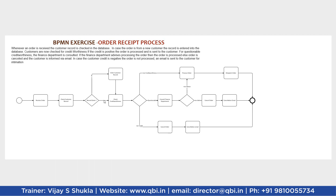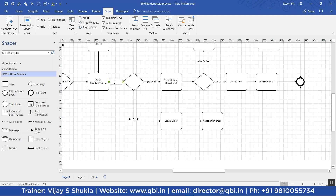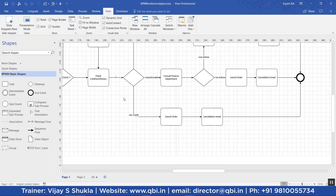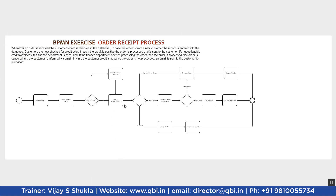Then customer records are checked for creditworthiness. If creditworthiness is positive, you process the order and dispatch the order. If creditworthiness is negative, you cancel the order and send a cancellation email. In case of questionable credit, you consult the finance department. If the finance department gives a positive advice, you process and dispatch the order. In case of negative advice, you cancel the order and send the cancellation email.